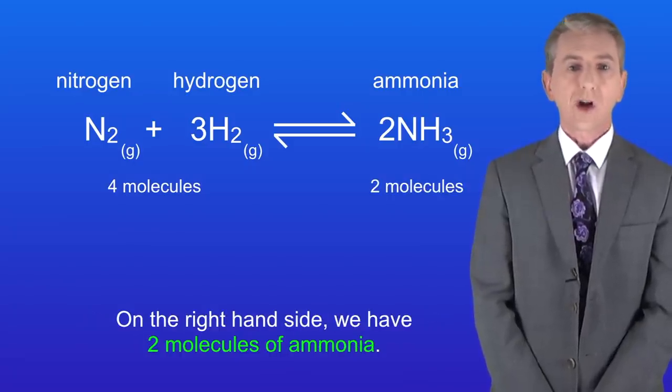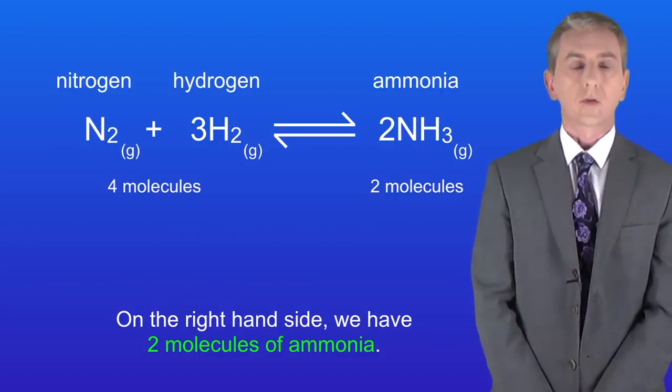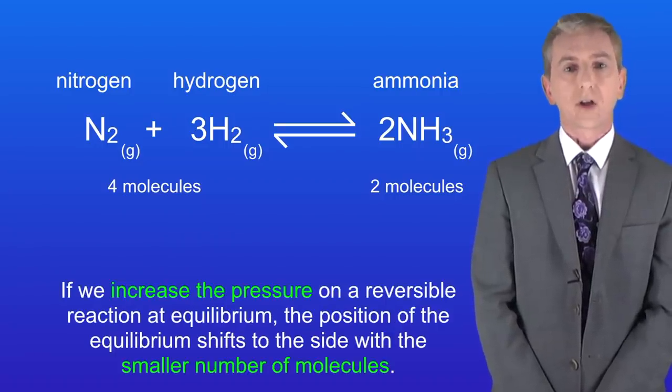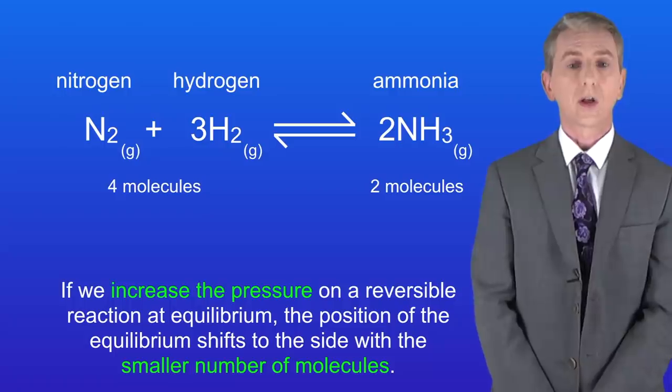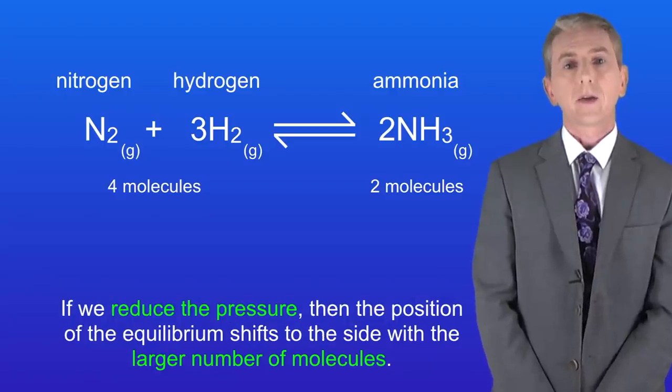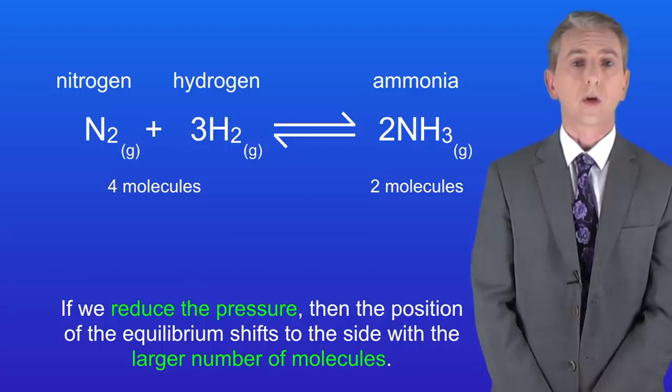So how does pressure affect reactions like this? You need to learn these rules. If we increase the pressure on a reversible reaction at equilibrium, the position of the equilibrium shifts to the side with the smaller number of molecules. And if we reduce the pressure, then the position of the equilibrium shifts to the side with the larger number of molecules.